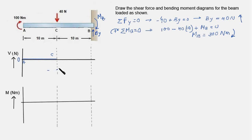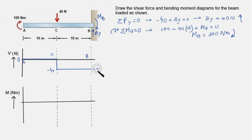The shear force remains at minus 40 between points C and B since there is no force in that region. We draw a horizontal line there. At B, the reaction force BY of 40 N acts in the positive y direction, producing a positive jump of 40, bringing us back to the 0 level. We started at A at 0 and end at B at 0, confirming the shear force curve is correct.